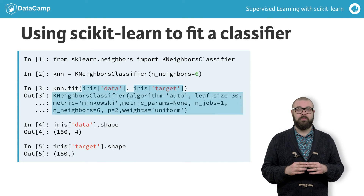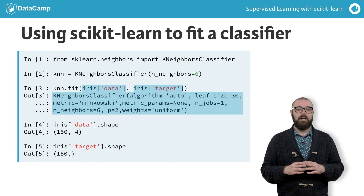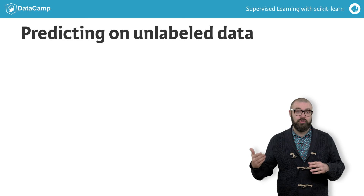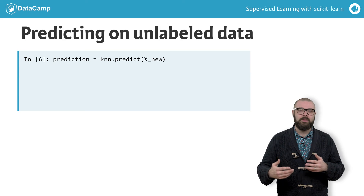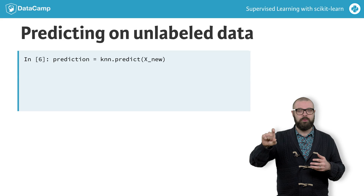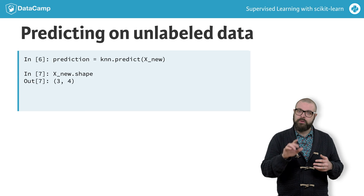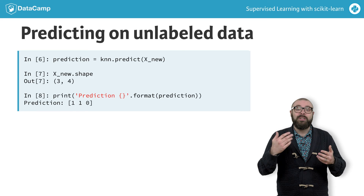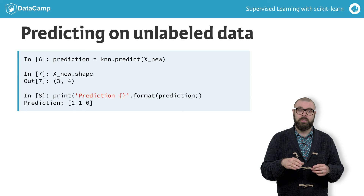Check out what is returned when we fit the classifier — it returns the classifier itself and modifies it to fit it to the data. Now that we've fit our classifier, let's use it to predict on some unlabeled data. We have a set of observations x_new, and we use the predict method on the classifier and pass it the data as a numpy array with features in columns and observations in rows. Checking the shape of x_new, we see three rows and four columns — three observations and four features. Calling knn.predict on x_new returns a three-by-one array. It predicts one, which corresponds to Versicolor, for the first two observations, and zero, which corresponds to Setosa, for the third.